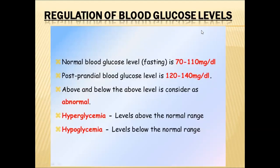Blood glucose levels must be maintained within a normal range. The normal range when fasting is 70 to 110 milligrams per deciliter, and the normal range immediately after meals is 120 to 140 milligrams per deciliter. These ranges have lower and higher values, and blood glucose levels below the lower value or above the higher value are both abnormal conditions.